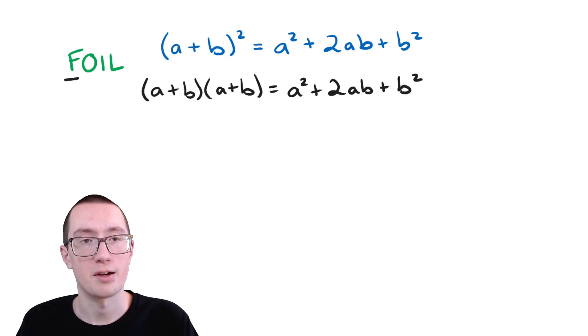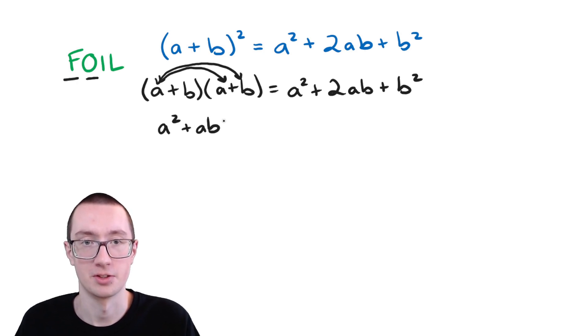So the first step of FOIL is f, which is first. So we need to multiply the first parts of both of these. a times a is just a squared. Now we need to do outer for o. So the outer parts. In this case, that's a times b, which is just a times b. You can't really multiply those. Then we have i for inner. So we multiply the inner parts. That's b times a, which is ba. Or in this case, we'll call it ab because it's similar to this.